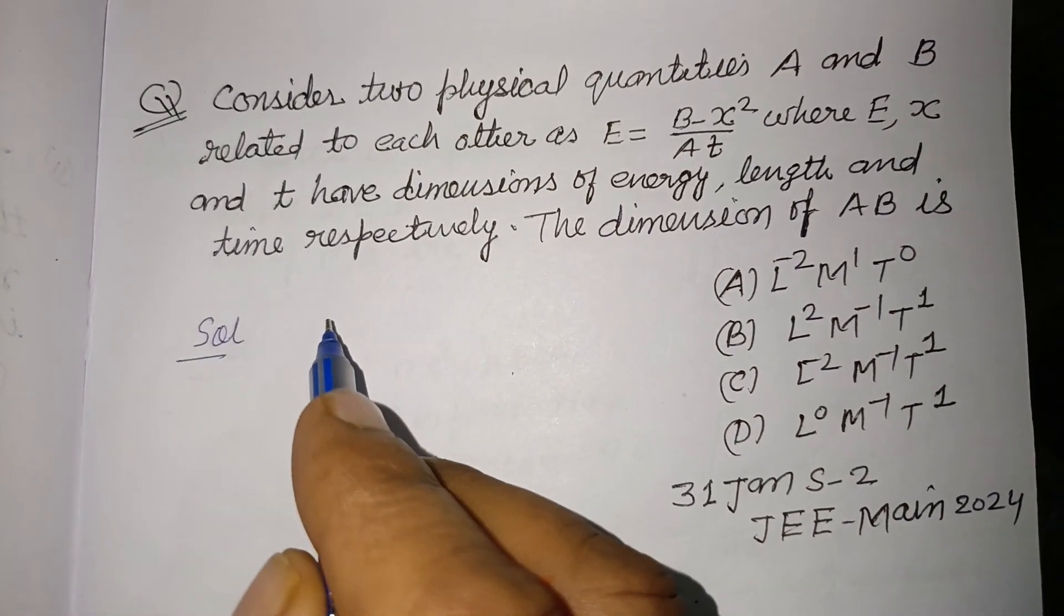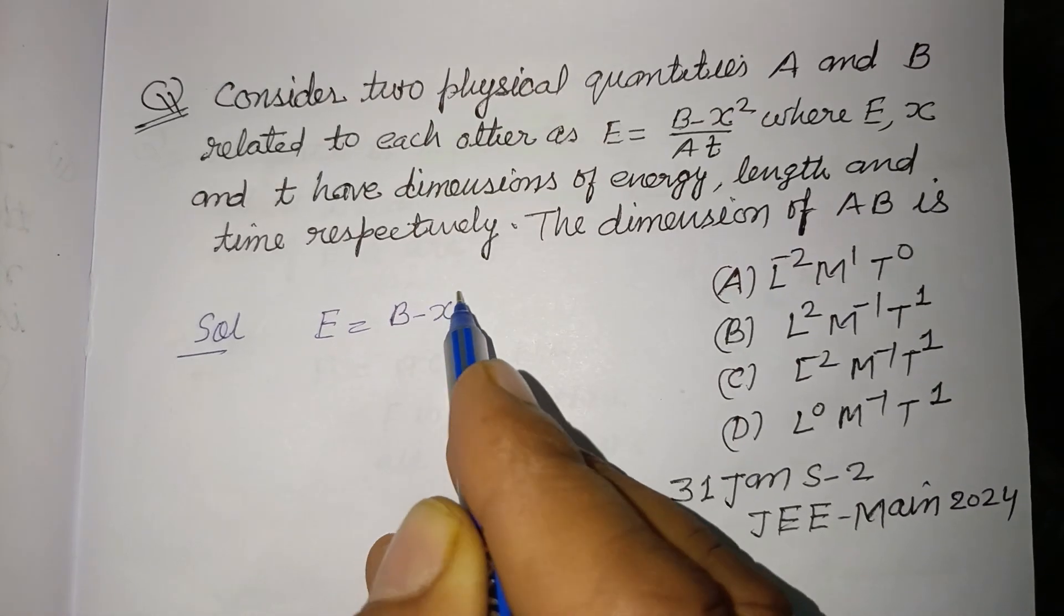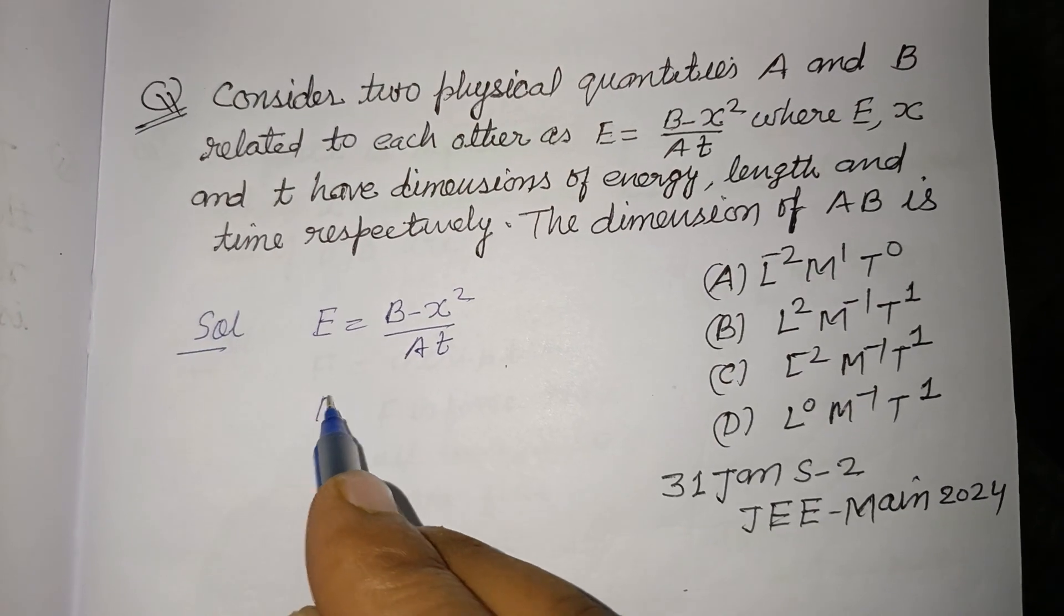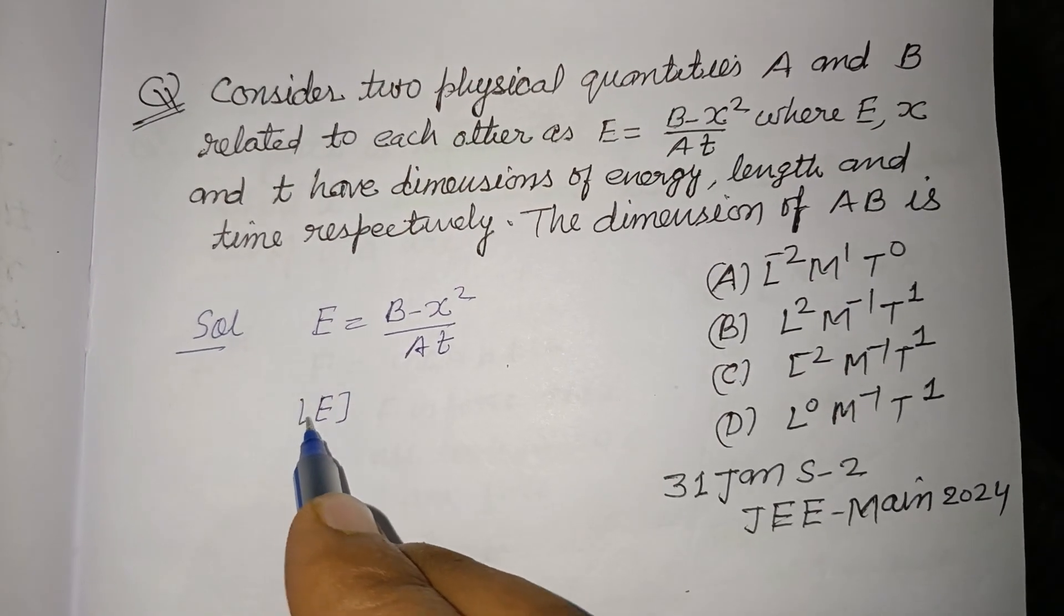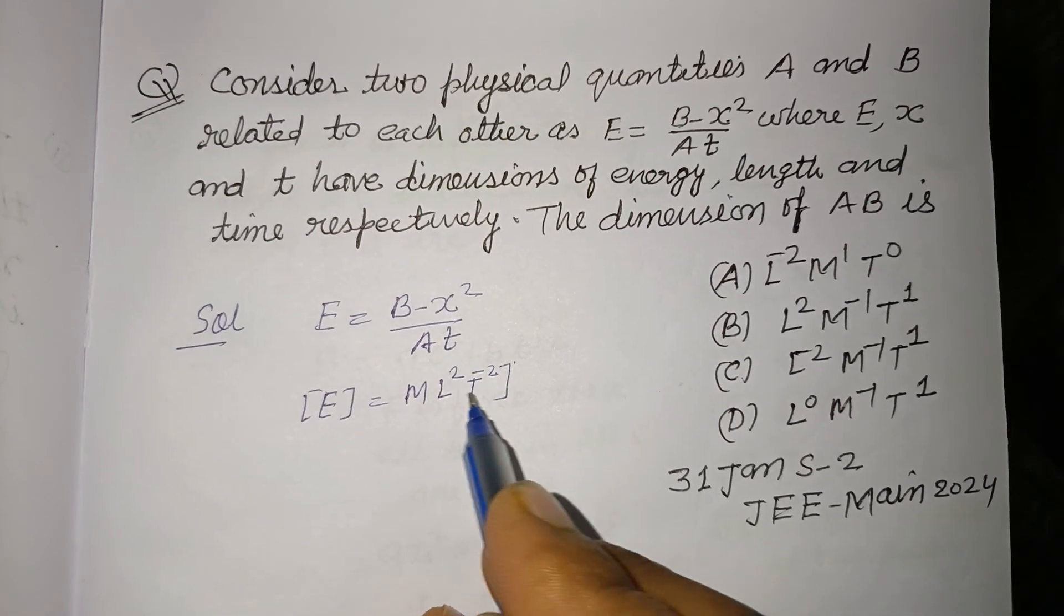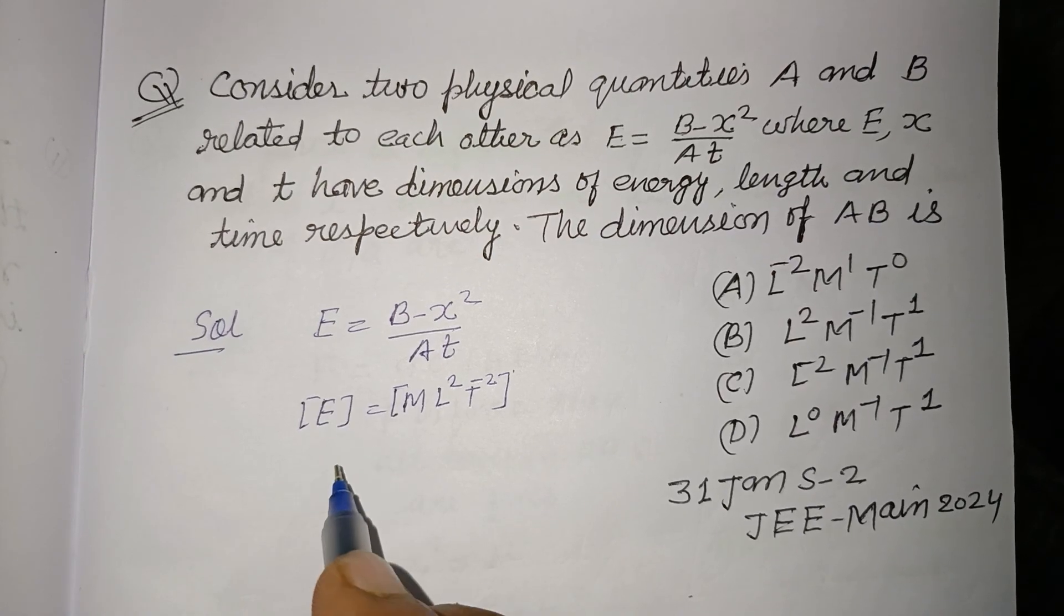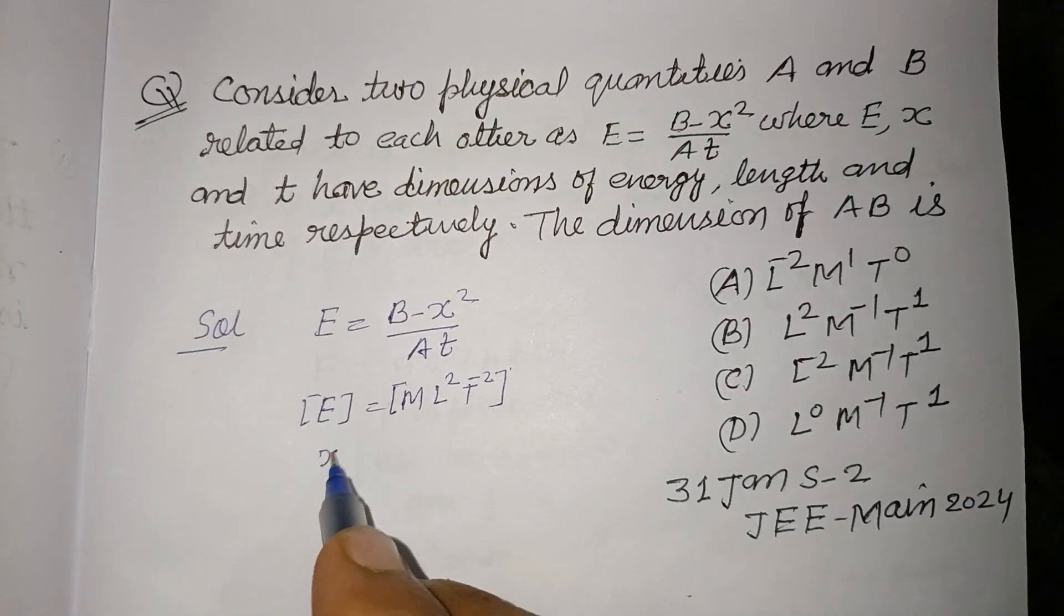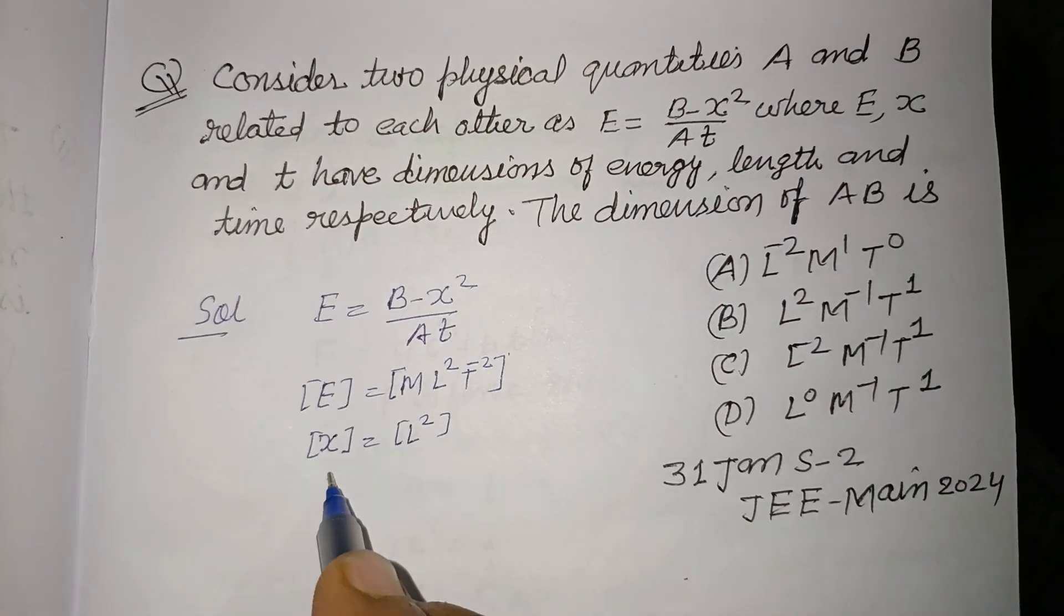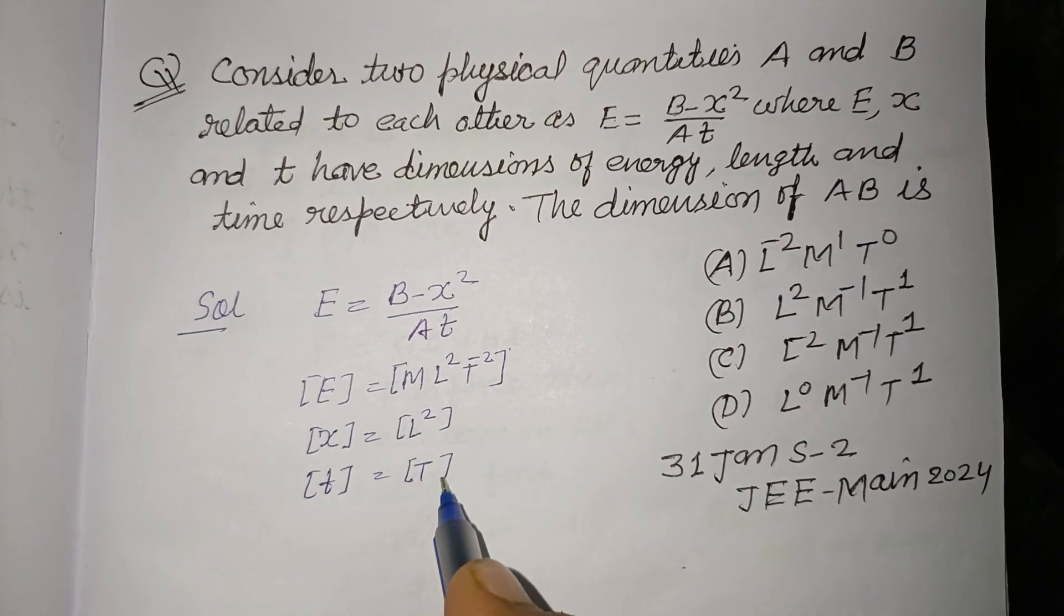So students, here E = (B - x²)/(At) is given to us. The dimension of E, energy, you know that ML²T⁻². The dimension of length, which is x here, equals L². And dimension of time is equal to T.